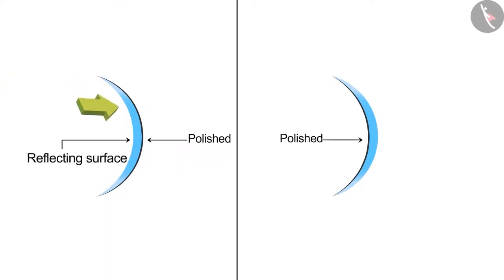If the reflecting surface of the mirror is tilted inwards and towards the center of the sphere, then it is called a concave mirror. And the mirror whose reflecting surface is tilted outwards is called a convex mirror.